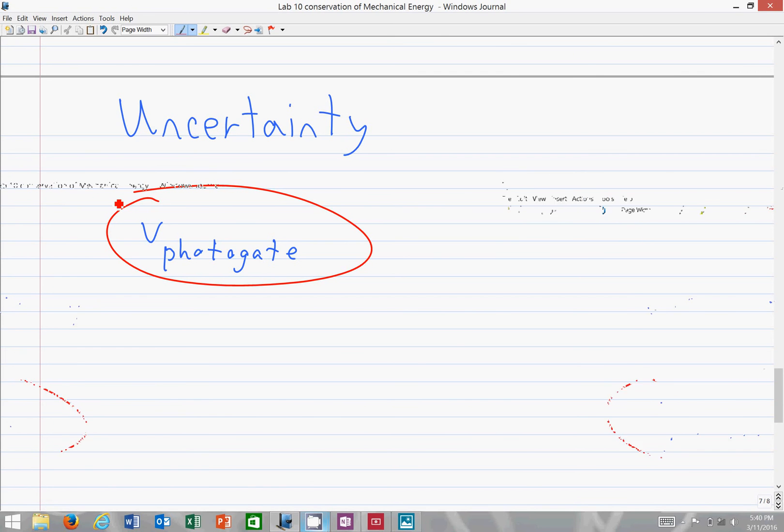So the only actual measurement, the big place of error, is going to be in your measured velocity from the photogate.